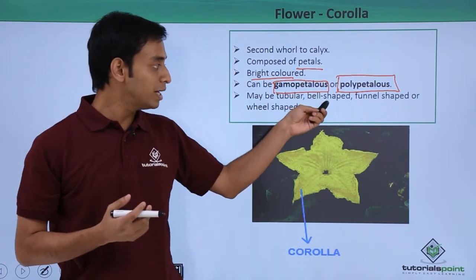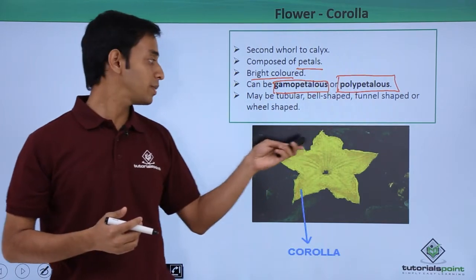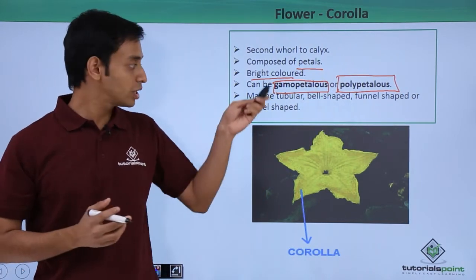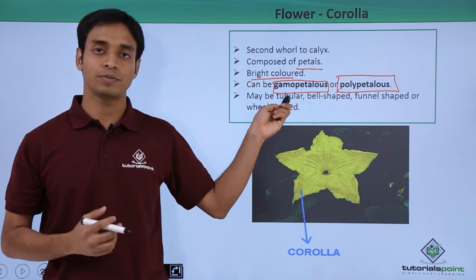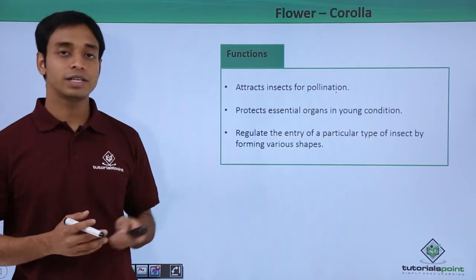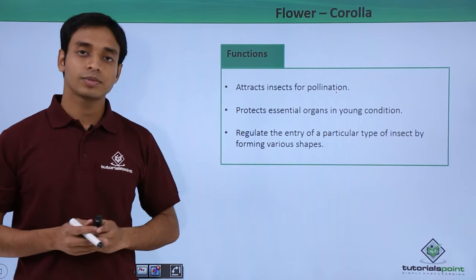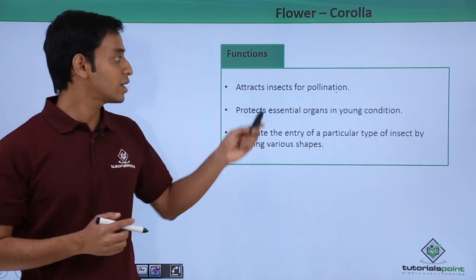These petals can be of different shapes. They can be tubular, bell-shaped, funnel-shaped, or wheel-shaped. So petals can have quite varied structural forms.